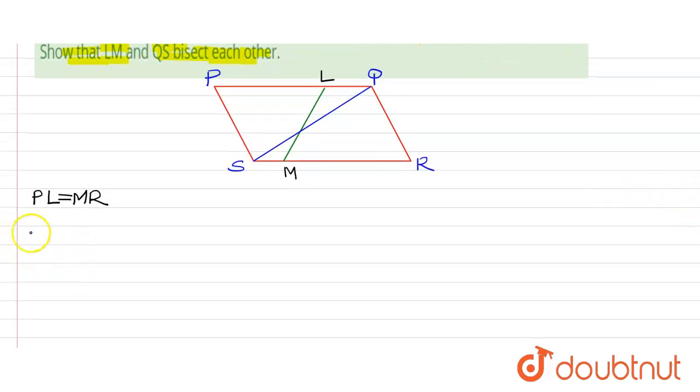So PL is equals to PQ minus LQ which is equals to, and MR is equals to RS minus SM. Since PQ is equals to RS.